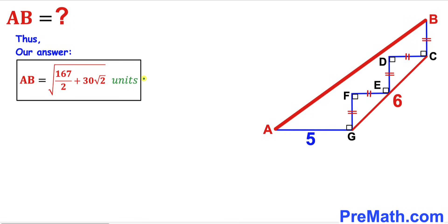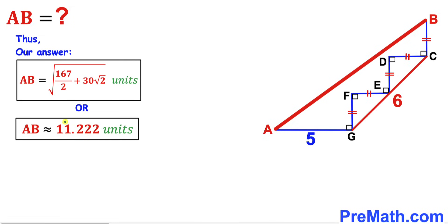So after all the calculations and manipulations, the length AB turns out to be √(167/2 + 30√2) units, which is approximately equal to 11.222 units. That is our final answer. Thanks for watching and please don't forget to subscribe to my channel for more exciting videos.